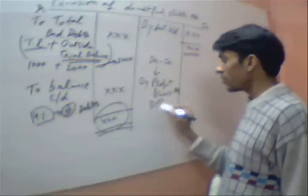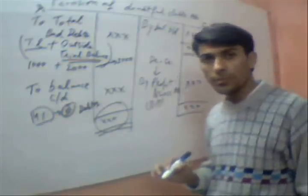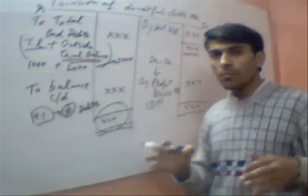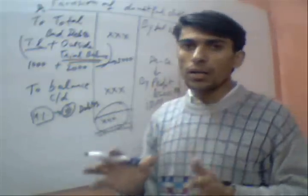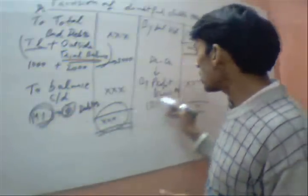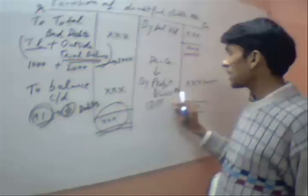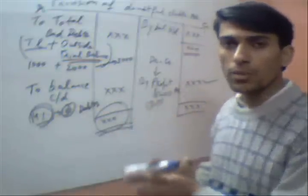If the debit side total is more than the credit side, then the difference will be shown as 'By Profit and Loss Account'. This is the balancing figure, and once written, both totals will agree and match. This balancing figure goes to the debit side of the profit and loss account. After this, you should not write bad debts separately in your profit and loss account, and you should not write any new provision — just write this amount, the profit and loss account balancing figure calculated from the provision of doubtful debts account. That is the real aim of making the provision of doubtful debts account.